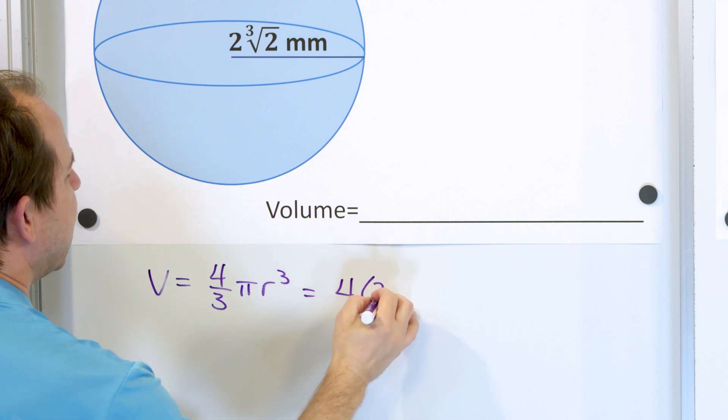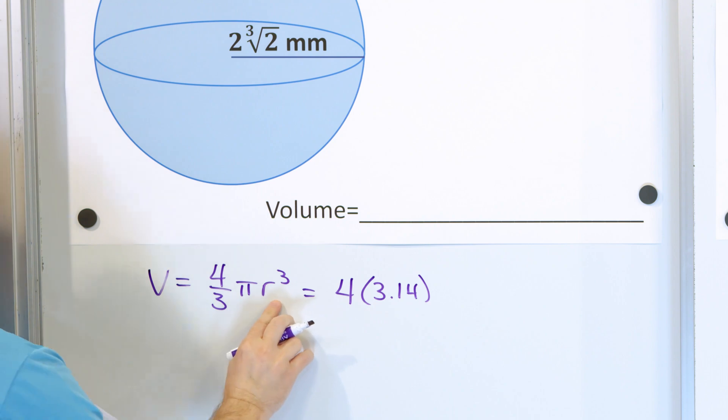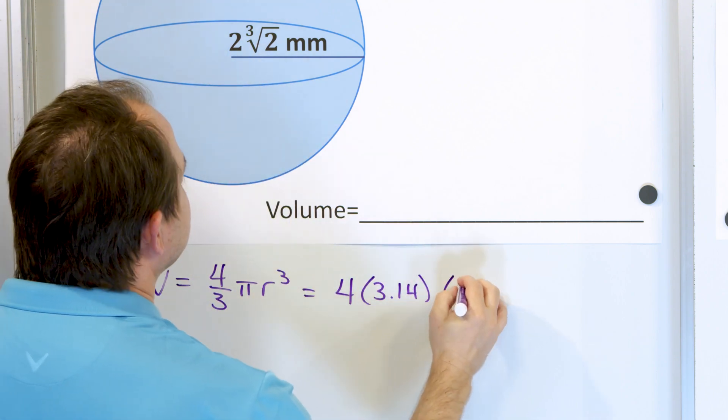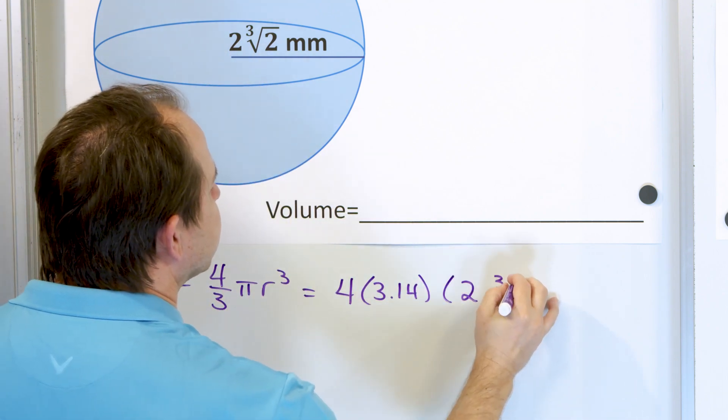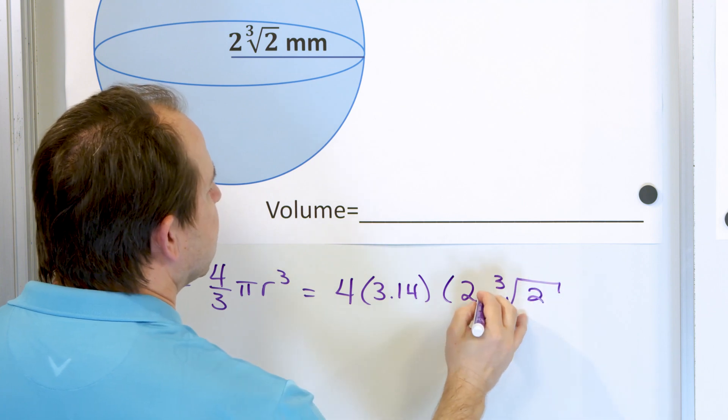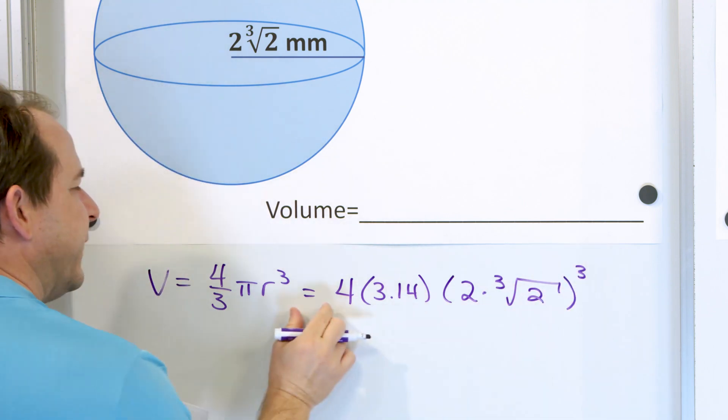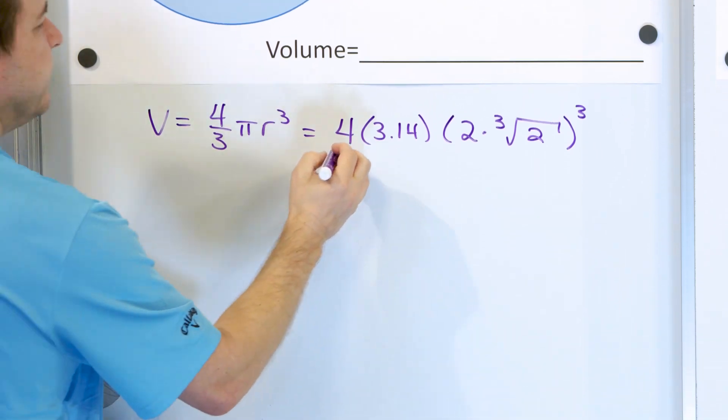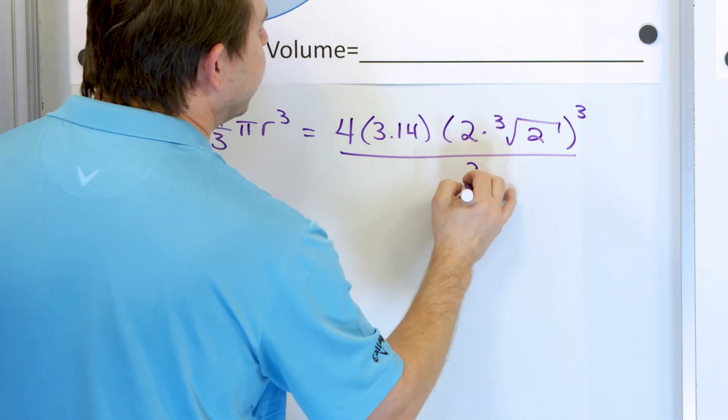So that's 4 times pi, 3.14, times r cubed. But r is this crazy thing. So it's 2 times the cube root of 2, and the whole thing is cubed because that's what the radius is cubed. Now we still have to divide by 3.